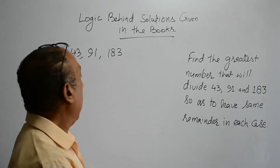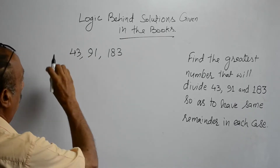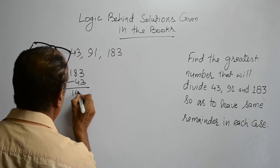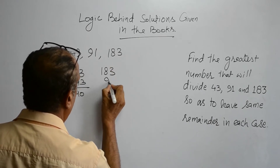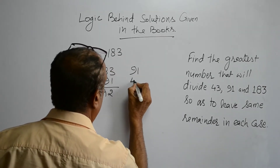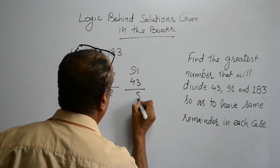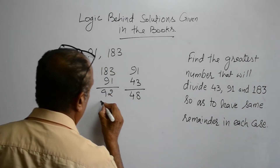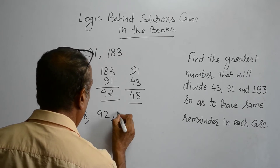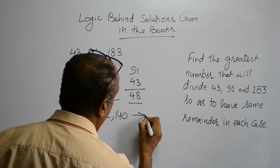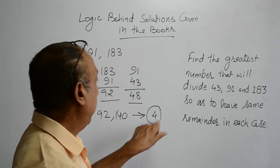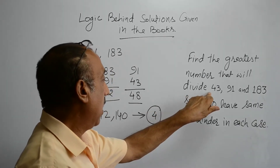In the classrooms and in the books we solve it like: from 183 we deduct 43, it is 140. From 183 we deduct 91, it is 92, and from 91 we deduct 43 and it is 48. So in the next step we take the HCF of 48, 92 and 140. The HCF of these numbers comes out to be 4, and 4 is our answer. Now if we divide 43 by 4, we are going to get remainder as 3.